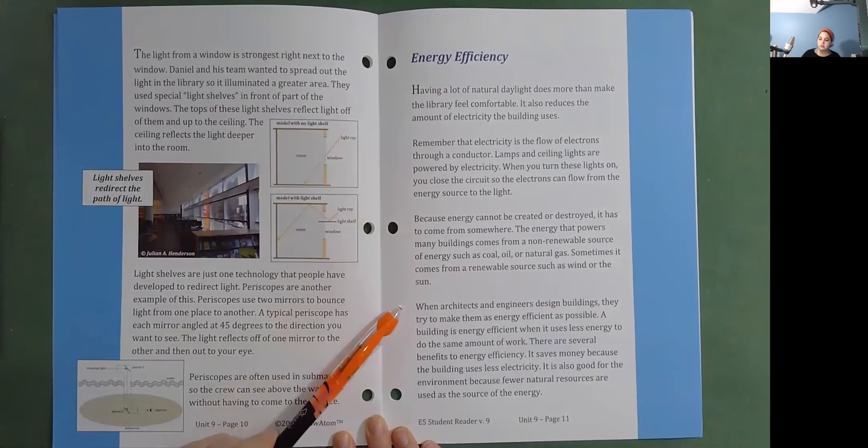When architects and engineers design buildings, they try to make them as energy efficient as possible. A building is energy efficient when it uses less energy to do the same amount of work. There are several benefits to energy efficiency. It saves money because the building uses less electricity. It is also good for the environment because fewer natural resources are used as the source of the energy.